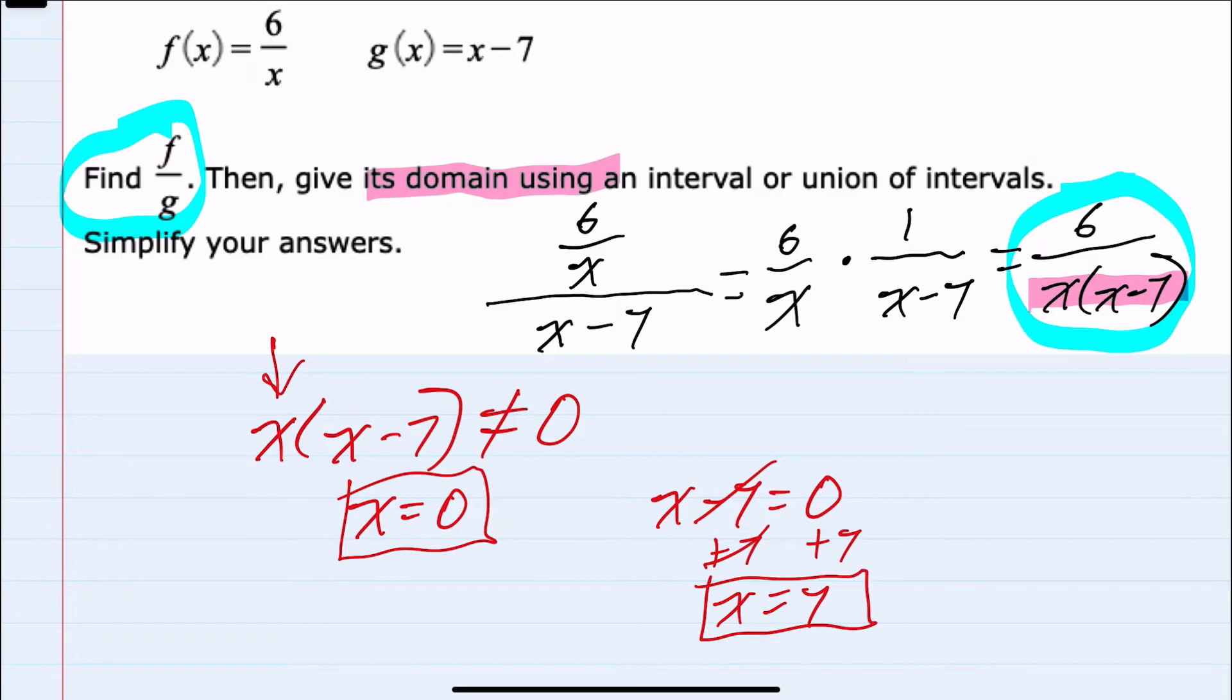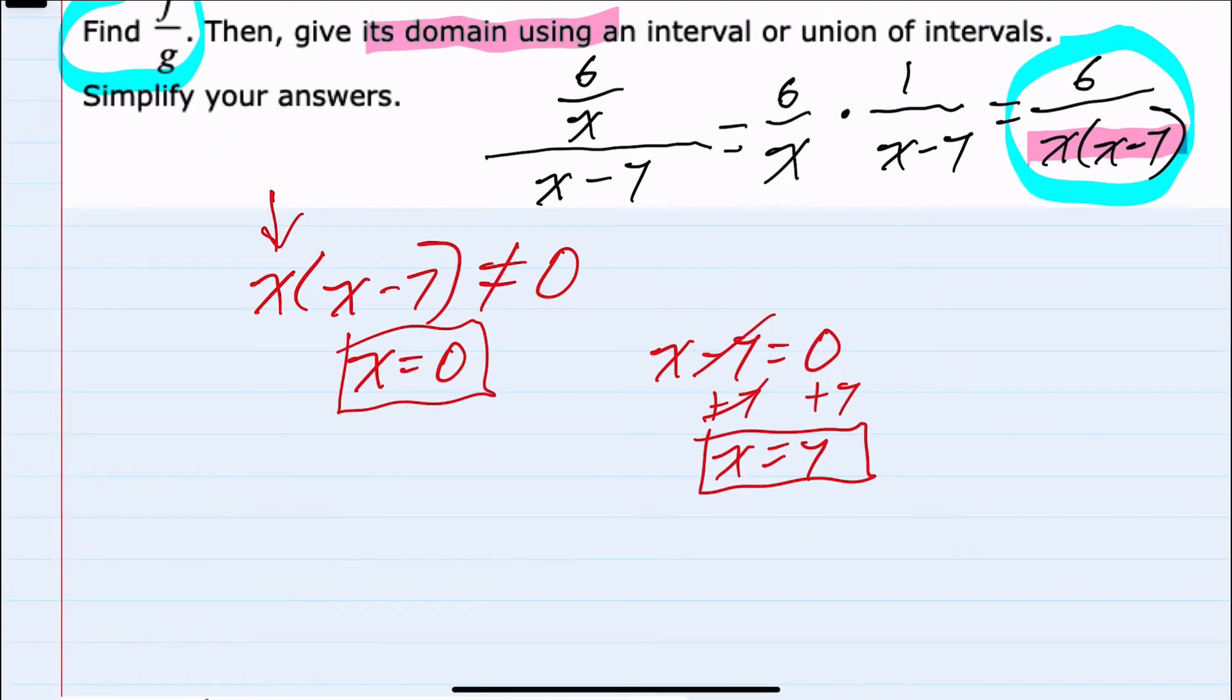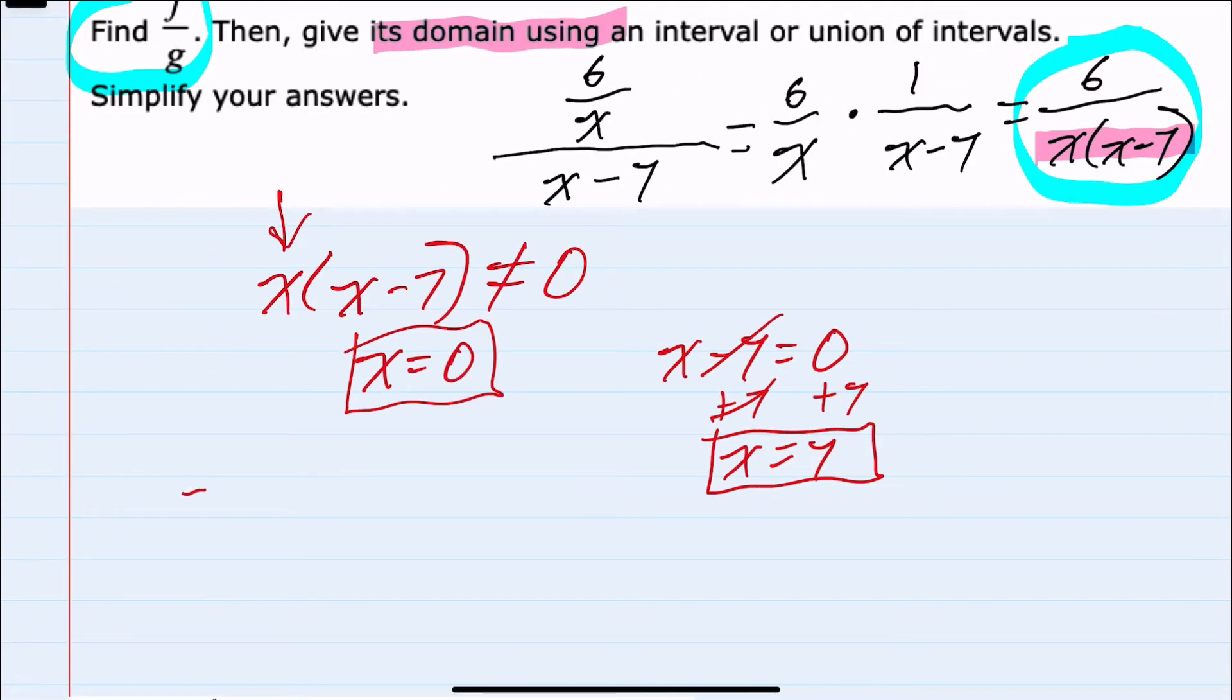So doing that with interval notation, I can see that x can be any value less than 0. So we could say that is negative infinity to 0, but not including 0. And then the union with that could be any number between 0 and 7. So 0 to 7. Again, not including the endpoints.